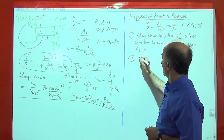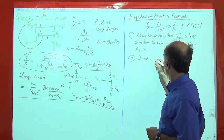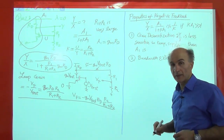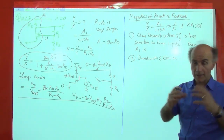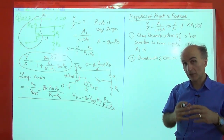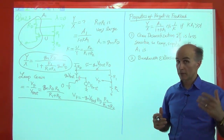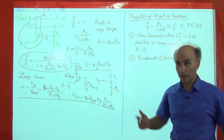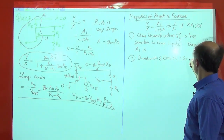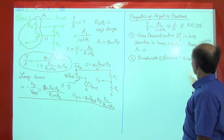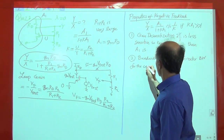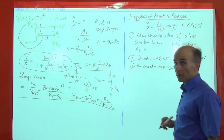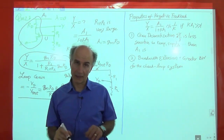The second property is bandwidth extension. What this means is that if the original amplifier A1 has a certain bandwidth, when I place it in feedback, the bandwidth actually improves — I can get more bandwidth. Of course, it's not free — when we place it in feedback, we sacrifice some gain but we gain more bandwidth. So we get a greater bandwidth for the closed-loop system than the open-loop system. The open-loop system has some bandwidth and some gain; the closed-loop system has more bandwidth and less gain. We'll quantify all of these later.